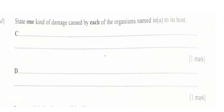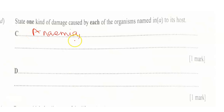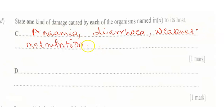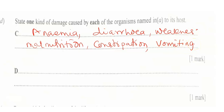Part D asks us to state one kind of damage caused by each of the organisms named in A to its host. C, remember, is tapeworm. Damages caused by tapeworm include anemia, diarrhea, weakness or fatigue, malnutrition, constipation, and vomiting. Any one of these will earn you one mark.